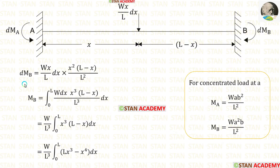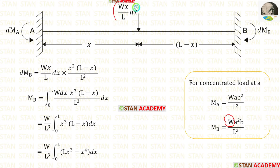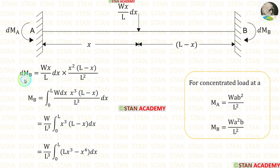Now let us derive the formula for MB. For a concentrated load at distance A, the fixed end moment MB is WA²B upon L². Here, instead of W we apply WX upon L · DX, instead of A we apply X, and instead of B we apply L minus X. We then integrate with limits 0 to L.